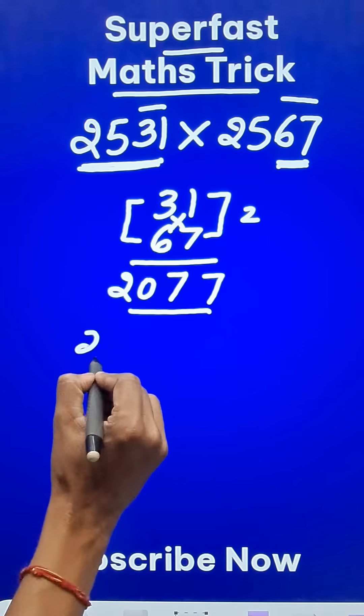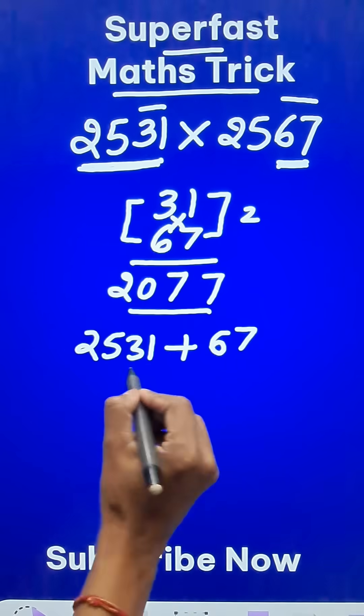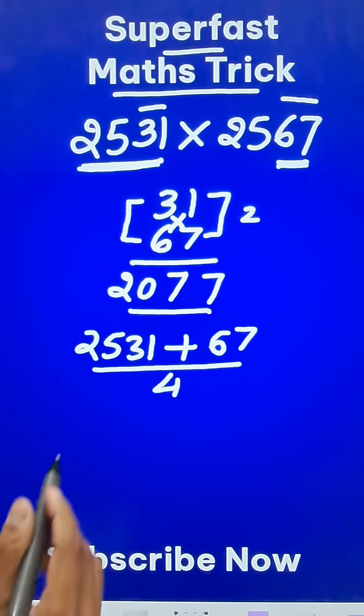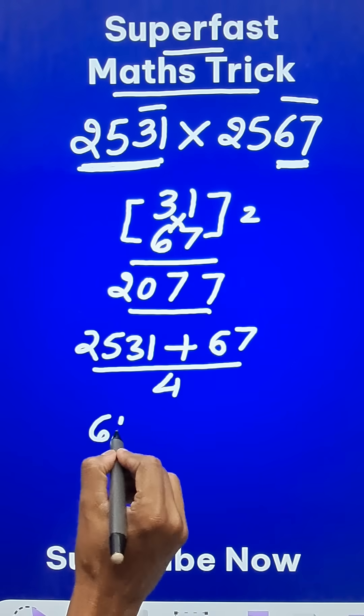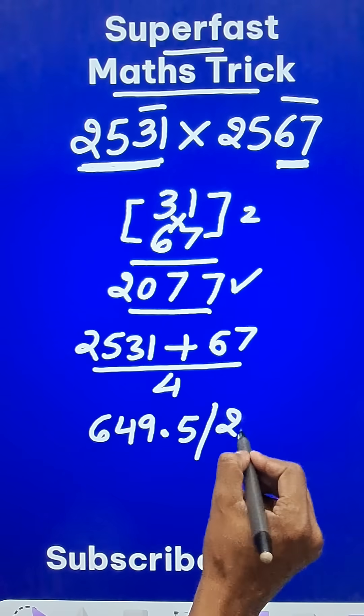Now this number 2531, we have to add the last two digits of this number, 67, and divide the result by 4. What we get here is 649.5, and remember the product we got here, 2077.